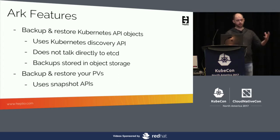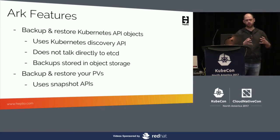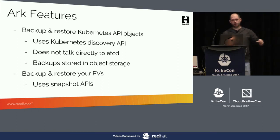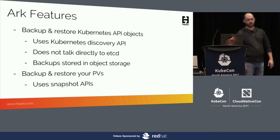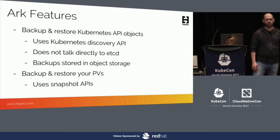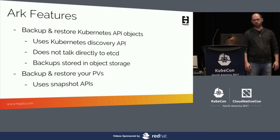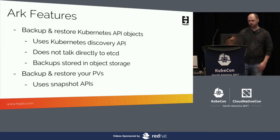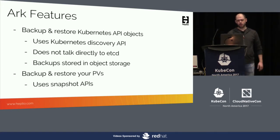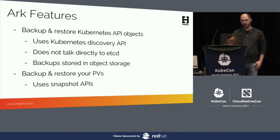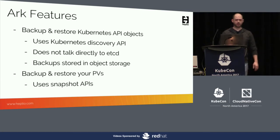Arc uses the discovery API to pull all of that out of your cluster and creates a tarball that stores all this information, placing the backup in the object storage system of your choice. The second big feature that Arc has is that it will actually back up and restore your persistent volumes, assuming you're on one of the supported cloud provider platforms. We use the snapshot APIs that the cloud providers offer for taking backups of volumes. Arc out of the box supports the three major public clouds, and we also have an easy way to extend the functionality to support the platform of your choice.